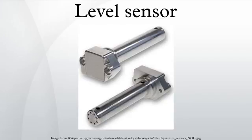The substance to be measured can be inside a container or can be in its natural form. The level measurement can be either continuous or point values. Continuous level sensors measure level within a specified range and determine the exact amount of substance in a certain place, while point level sensors only indicate whether the substance is above or below the sensing point. Generally the latter detect levels that are excessively high or low.